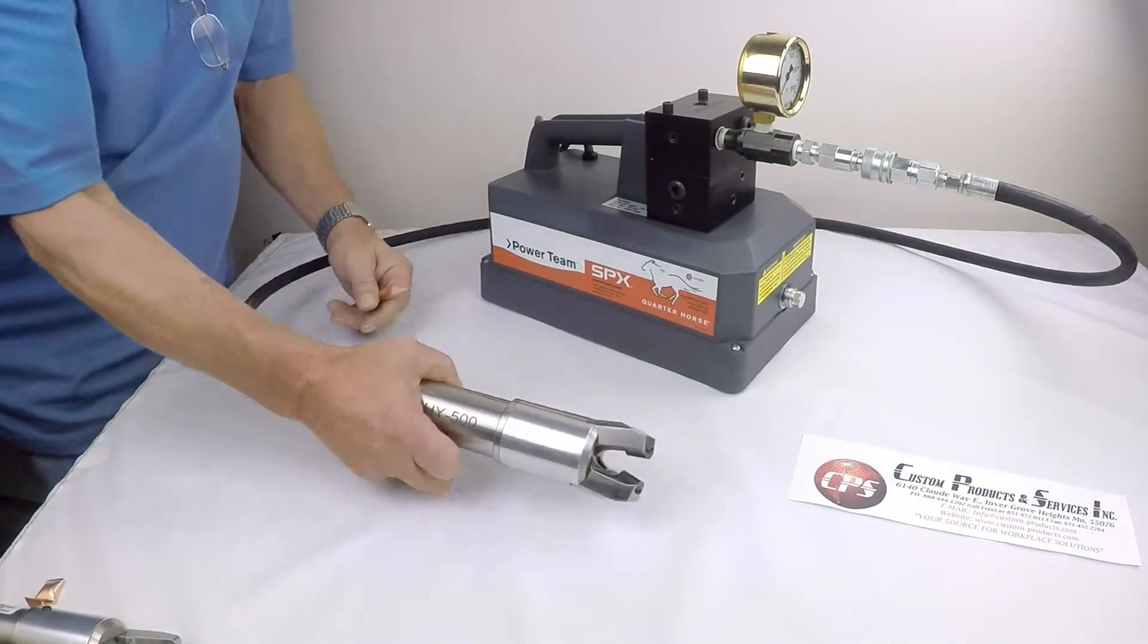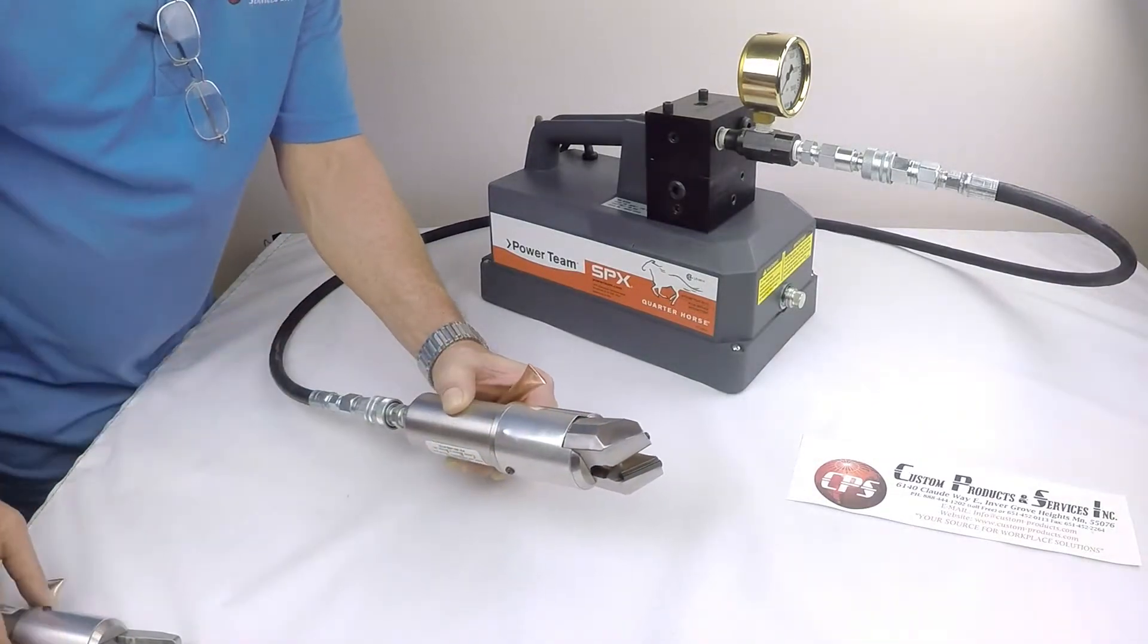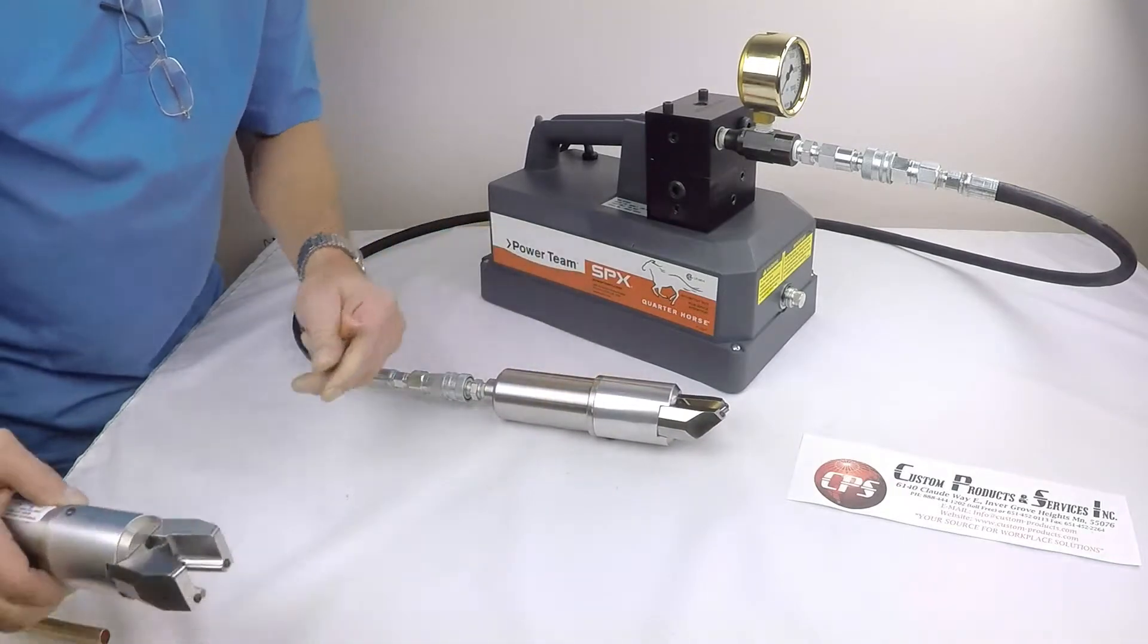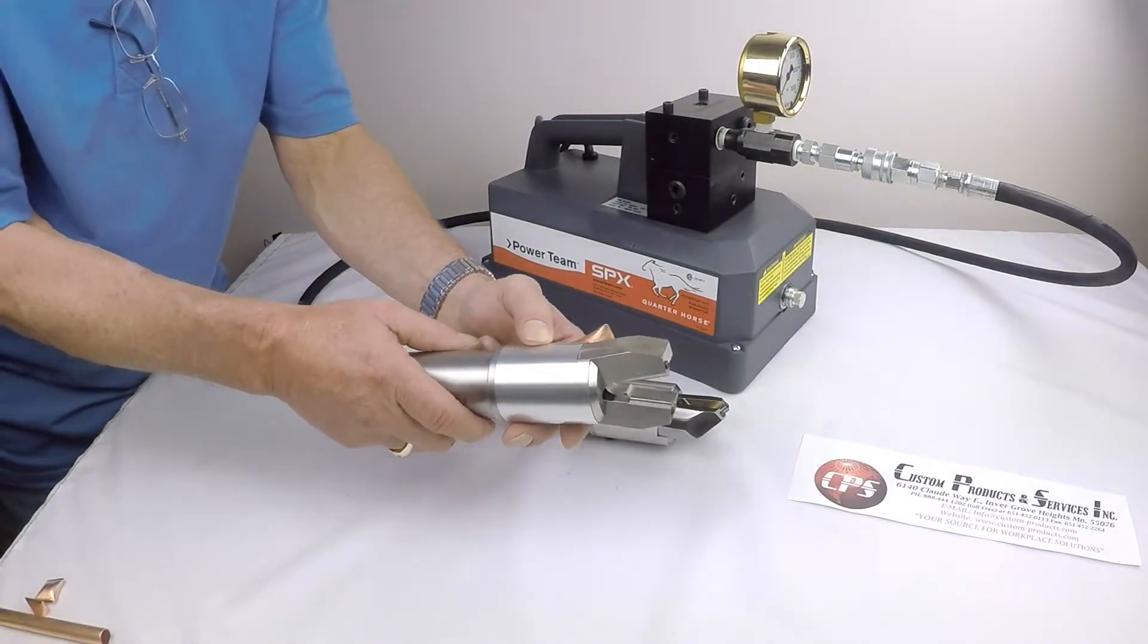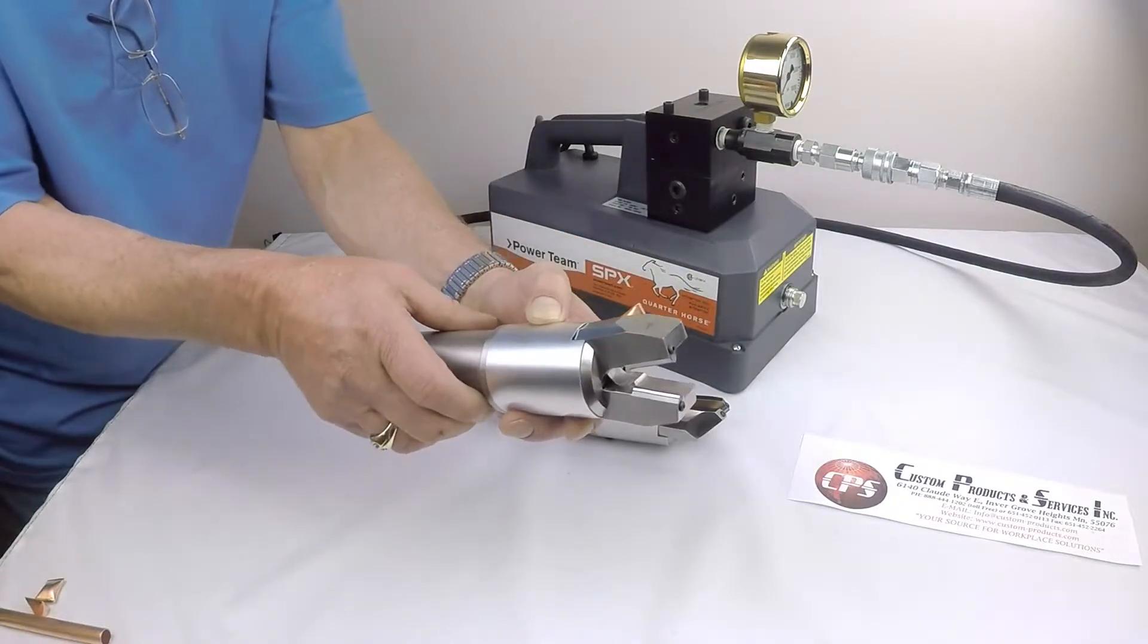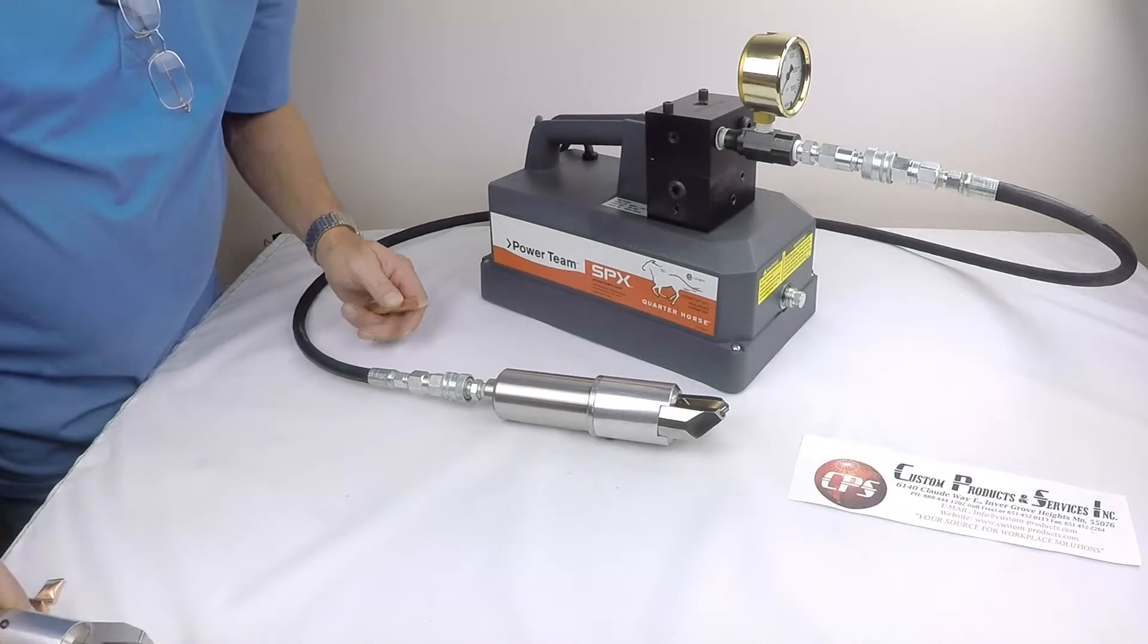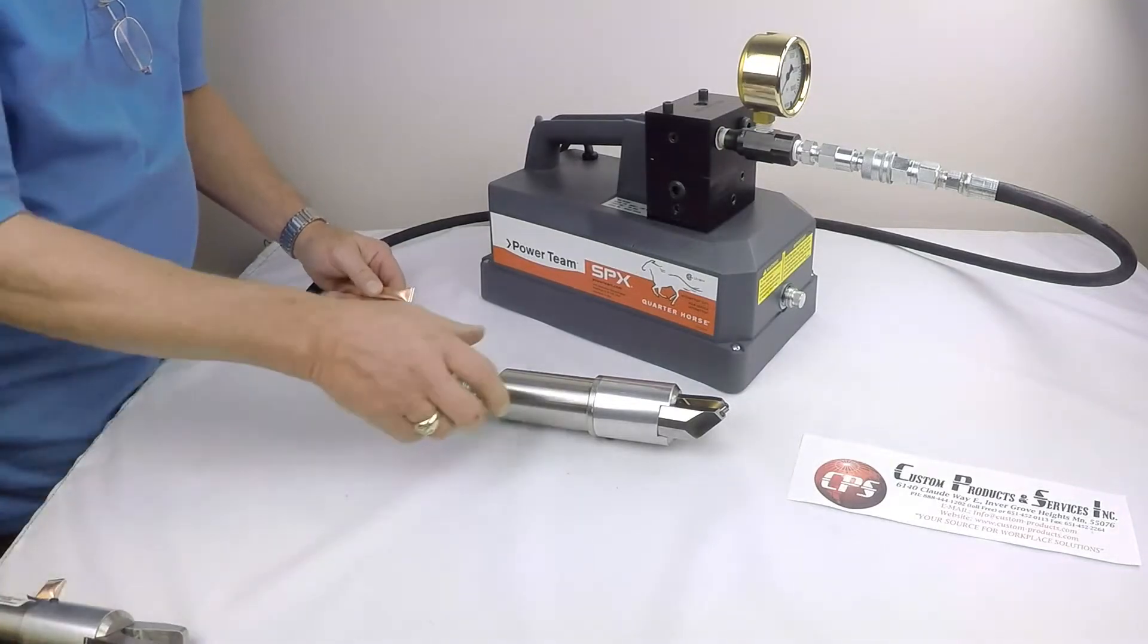The tool is also equipped, as we're showing here, with a 45 degree angle, which is our standard jaw. It can also be equipped with other angles. For example, this one is a zero degree or straight jaw for applications where getting access to the tube isn't feasible with an angled jaw.